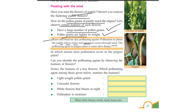The pollinating agent in the pepper plant is water. Water and dewdrops are pollinating agents. Now the question is: in which season does pollination occur in pepper plants? In pepper plants, which season will pollinate? The answer involves water and dewdrops.